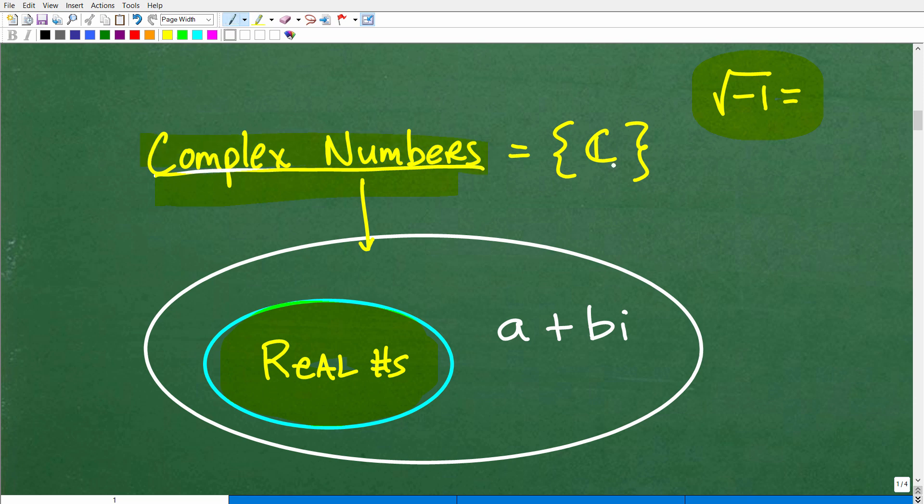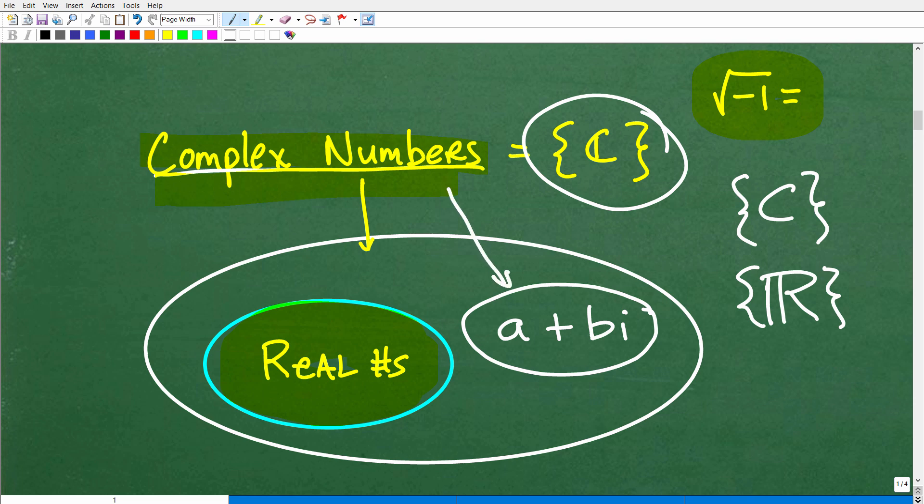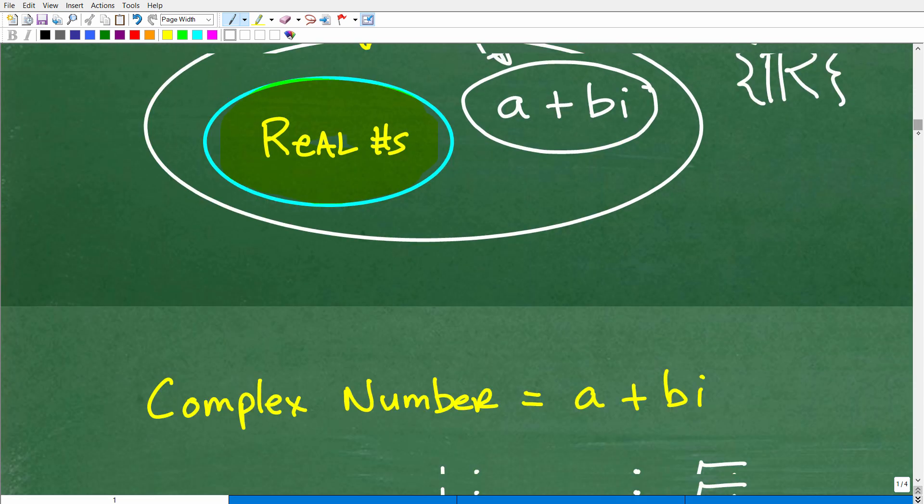Now, notice this little notation here. This little bracket right here in mathematics is kind of typical of what we call a set. So if you see a C like that, that could be like the complex number system or a big R like that, that would represent the real number system. Or sometimes you'll have like that, the set of real numbers. So just a little bit about mathematical notation. Now, when you're looking at complex numbers, we're going to see that complex numbers take the form of something called a plus bi. Okay, so this is what a complex number looks like. And let's go ahead and explore that right now.